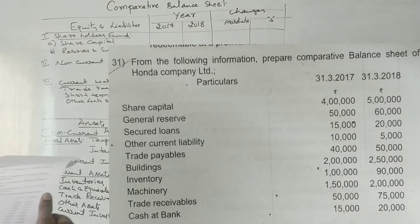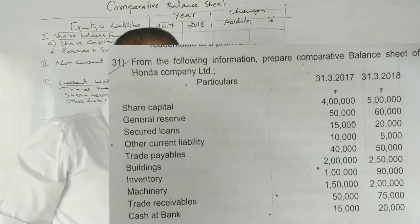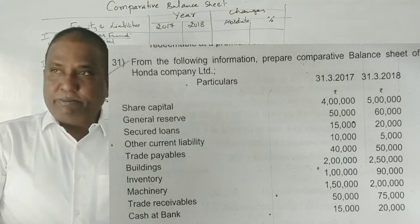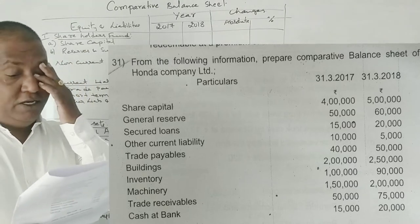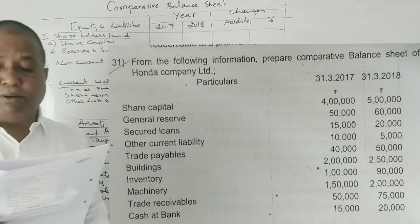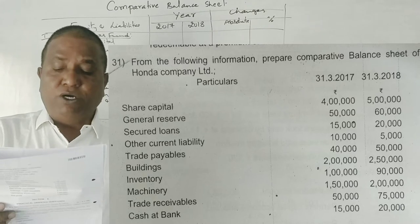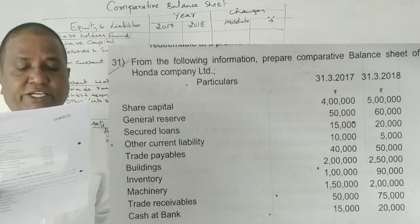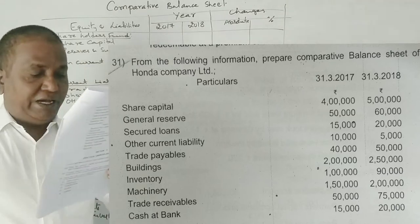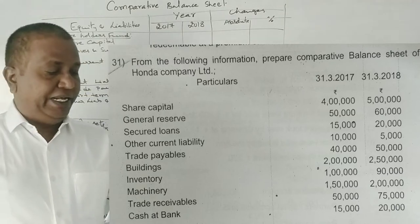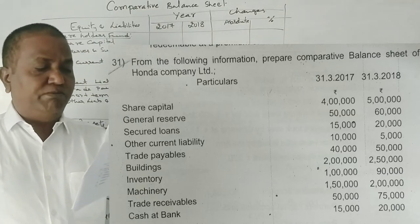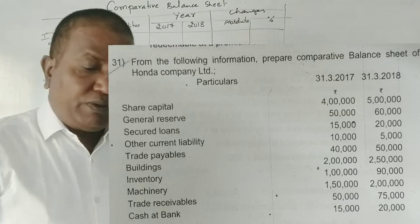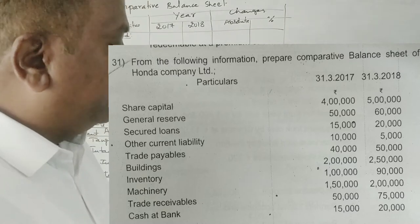Students, compare this balance sheet. Now, there is one question from 2018: from the following information, prepare a comparative balance sheet of One Company Limited. The items given are: share capital, general reserve, secured loans, other current liabilities, trade payables, buildings, inventory, machinery, trade receivable, and cash and bank. Now we will solve this problem.